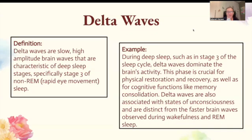Delta waves. Delta waves are slow, high-amplitude brain waves characteristic of deep sleep stages, specifically stage three of non-REM sleep. During deep sleep in stage three, delta waves dominate the brain's activity. This phase is crucial for physical restoration and recovery, as well as cognitive functions like memory consolidation. Delta waves are also associated with states of unconsciousness and are distinct from the faster brain waves observed during wakefulness and REM sleep.